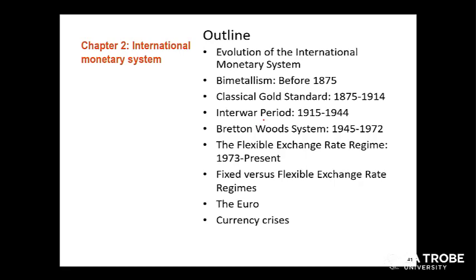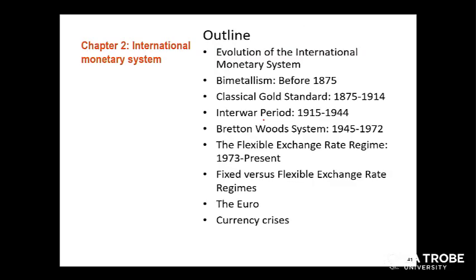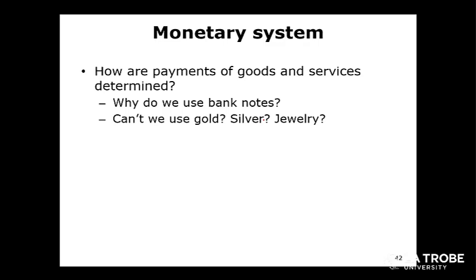After talking about the different types of monetary systems, we then talk about the special case of the euro. Finally, we talk about different issues with currencies in the past. So how do we define an international monetary system? The purpose of an international monetary system is to facilitate trades across borders. If I want to trade with my neighbour, I need to be able to determine the value of their currency relative to my currency.